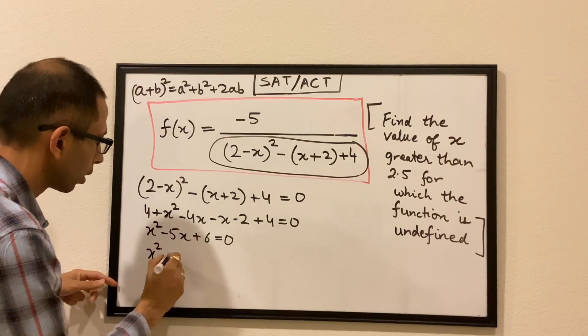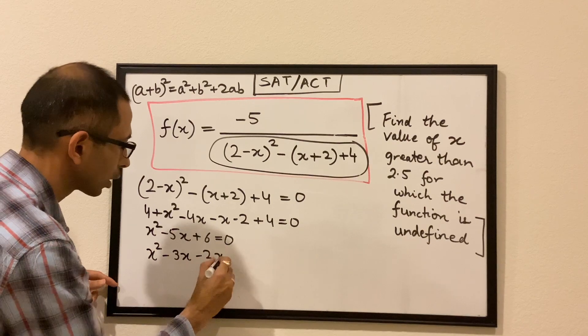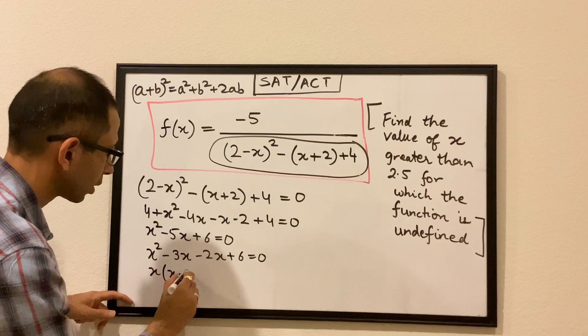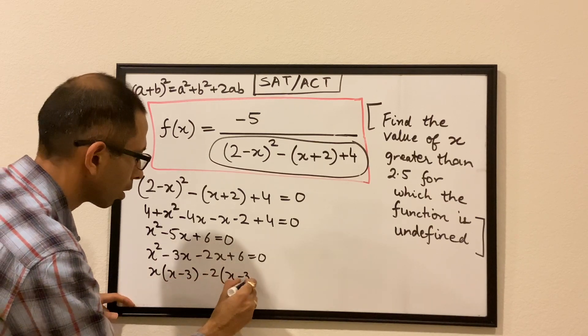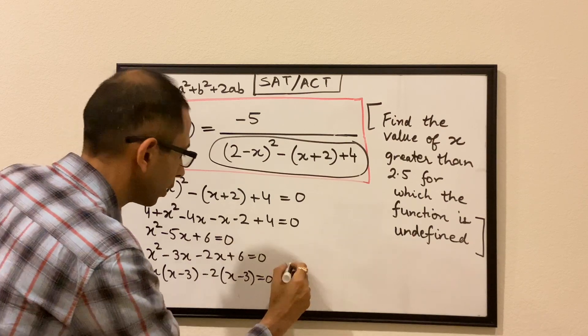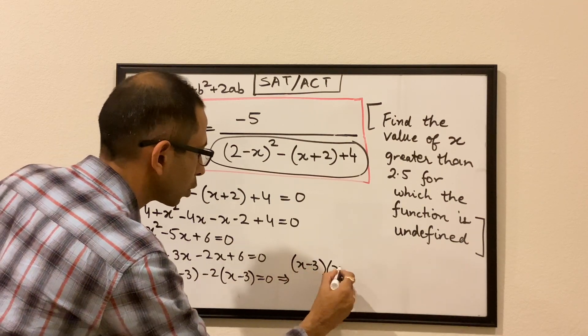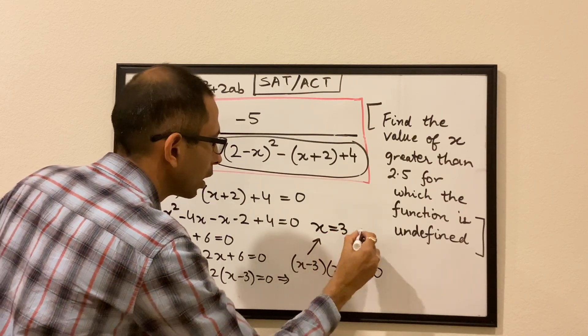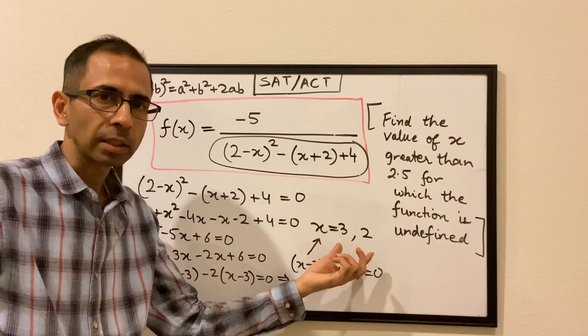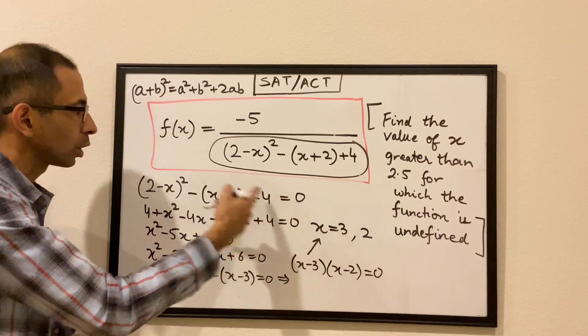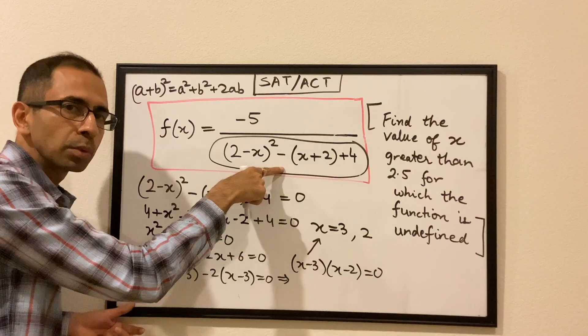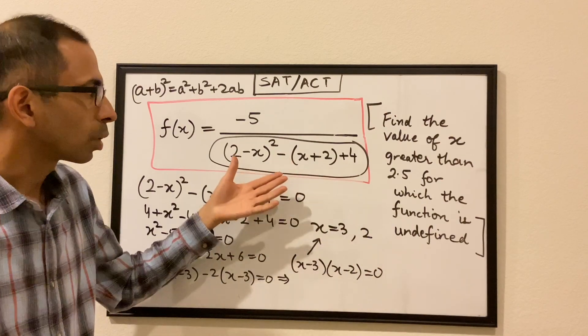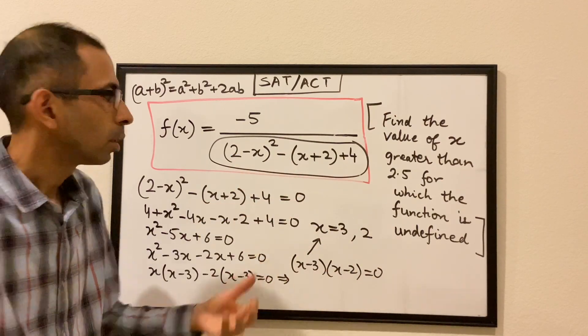So x square minus 3x minus 2x plus 6 is equal to 0, which gives us... and finally we get (x minus 3) times (x minus 2) is equal to 0, giving us the two values of x as 3 and 2. So these are the two values of x, 2 and 3, for which this denominator will become 0 and hence the function will become undefined. But since the equation is asking for us to give the value greater than 2.5, so our answer will be 3.